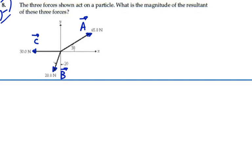And we can see that this is 65 newtons, this is 20 newtons, and this is 30 newtons. Our respective angles are 30 degrees here. We've got 20 degrees here, which will be 70 degrees from the x-axis, and then no angle from the x-axis for vector C.